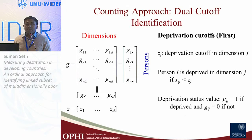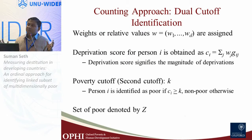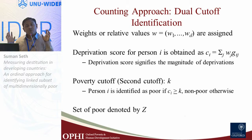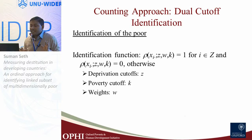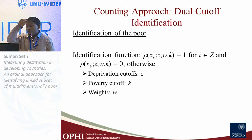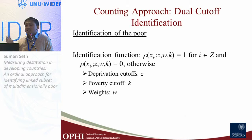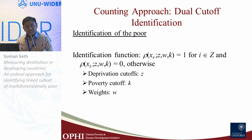Once weights are determined, a deprivation score is obtained for each person, and the person is identified as poor if the deprivation score exceeds the poverty cutoff k. The identification function rho depends on the achievement vector, deprivation cutoff, poverty cutoff, and weight vector — giving a value of one if the person is multidimensionally poor, zero otherwise. So we have three sets of parameters: the deprivation cutoff vector Z, the poverty cutoff (the dual cutoff), and the weight vector.